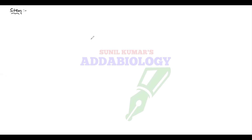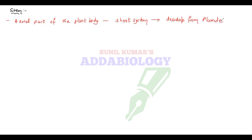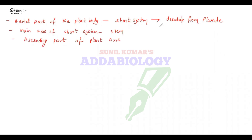Hello friends, I am Sunil sir and I am back with a new video. In this video I will be talking about stem. Stem is the aerial part of the plant body, it is called as shoot system which develops from plumule.